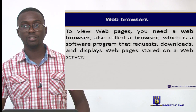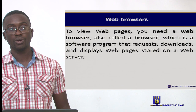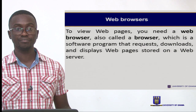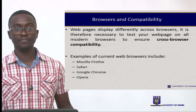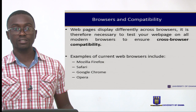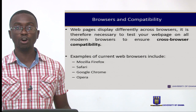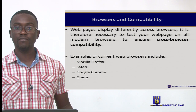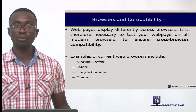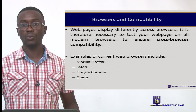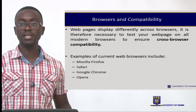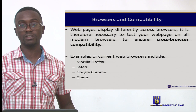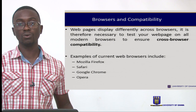To view web pages, you need a web browser — simply called a browser — which is a software program that requests, downloads, and displays web pages stored on a web server. Web pages display differently across browsers, so it is necessary to test your web page on all modern browsers to ensure cross-browser compatibility. Cross-browser compatibility means that information and display should be uniform across all browsers. Examples of current browsers are Mozilla Firefox, Safari, Google Chrome, and Opera.